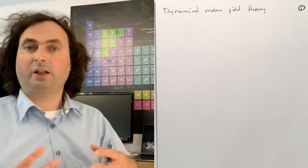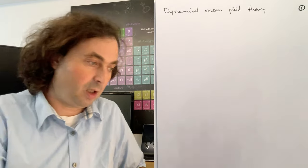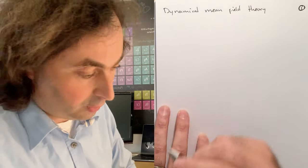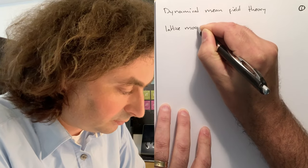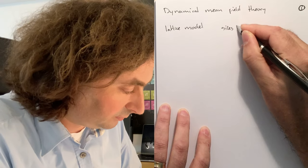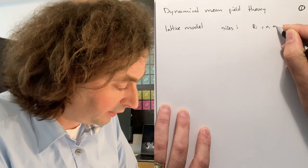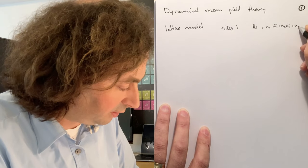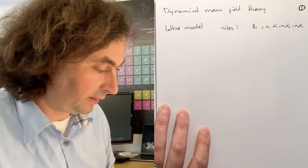Let's see what kind of models we can solve with dynamical mean field theory and then derive how we can justify the approximations. We are talking about lattice models where we have sites i, and they sit on a lattice such that their coordinates are given by integers times a lattice vector, in three-dimensional space with three-dimensional lattice vectors.